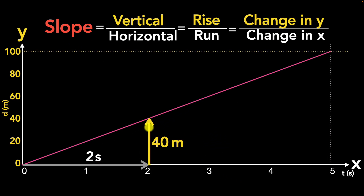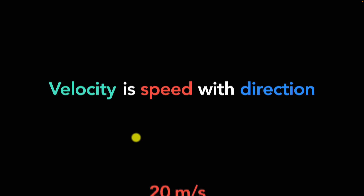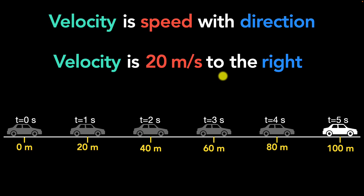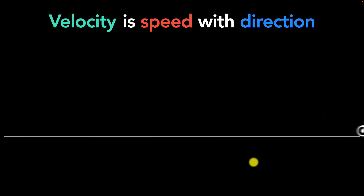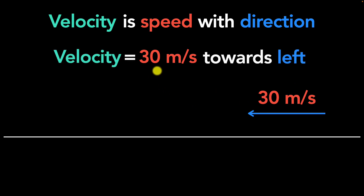This brings us to velocity. What exactly is velocity? Velocity is just speed with direction. In our example, the car has a speed of 20 meters per second, and its velocity is 20 meters per second to the right. Here's another example: a bike traveling 30 meters every second — its speed is 30 meters per second. But since it's traveling to the left, its velocity is 30 meters per second towards the left.